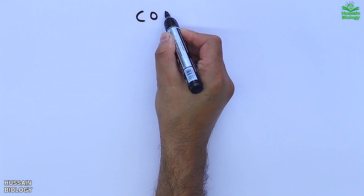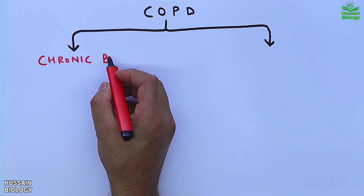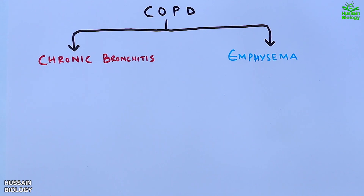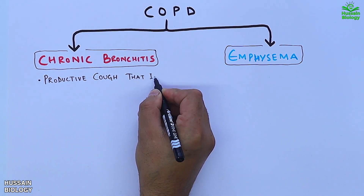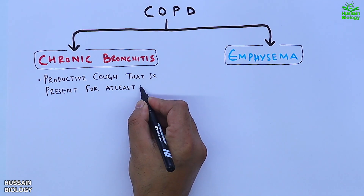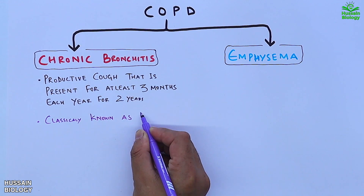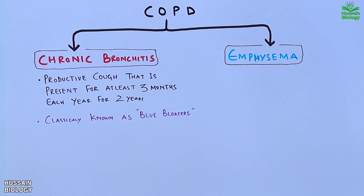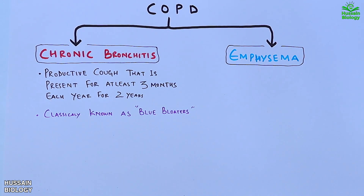COPD encompasses two important types of conditions: chronic bronchitis and emphysema. Chronic bronchitis is a productive cough present for at least 3 months each year for 2 years. It is classically known as 'blue bloaters' because it can cause severe difficulty breathing and decreased oxygen in the body, resulting in a patient's skin and lips taking on a blue tint.